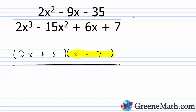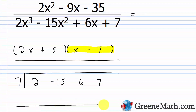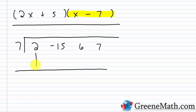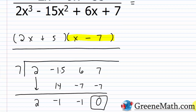For synthetic division with x - 7, we put 7 outside and write the coefficients: 2, -15, 6, 7. Drop down 2. 7 times 2 = 14; -15 + 14 = -1. 7 times -1 = -7; 6 + (-7) = -1. 7 times -1 = -7; 7 + (-7) = 0. We have no remainder, which means x - 7 is indeed a factor of 2x³ - 15x² + 6x + 7, and the quotient is 2x² - x - 1.